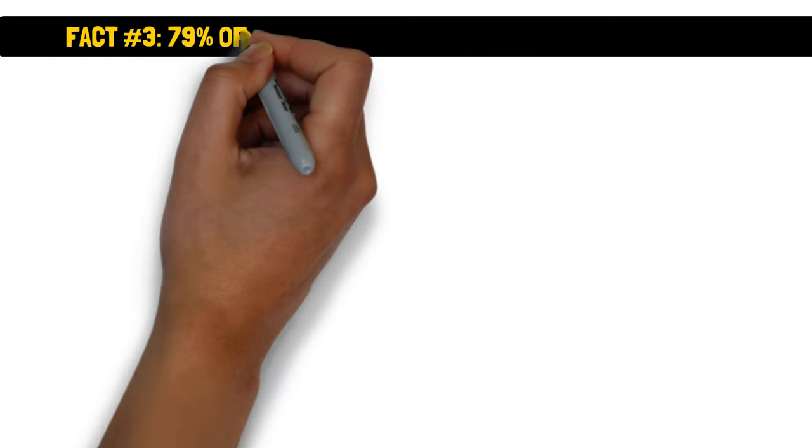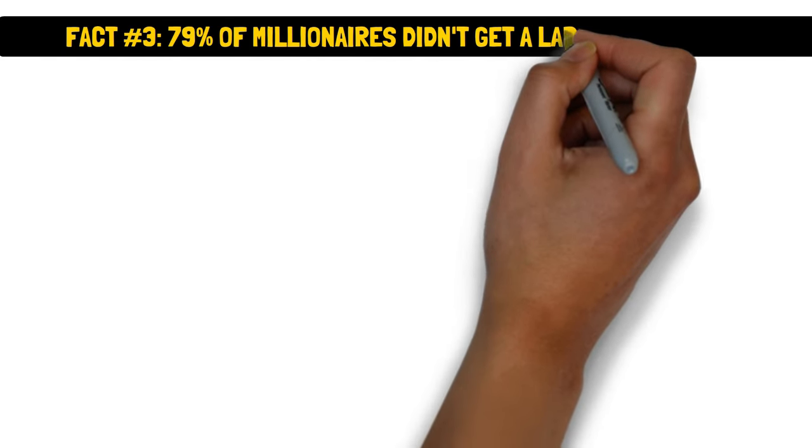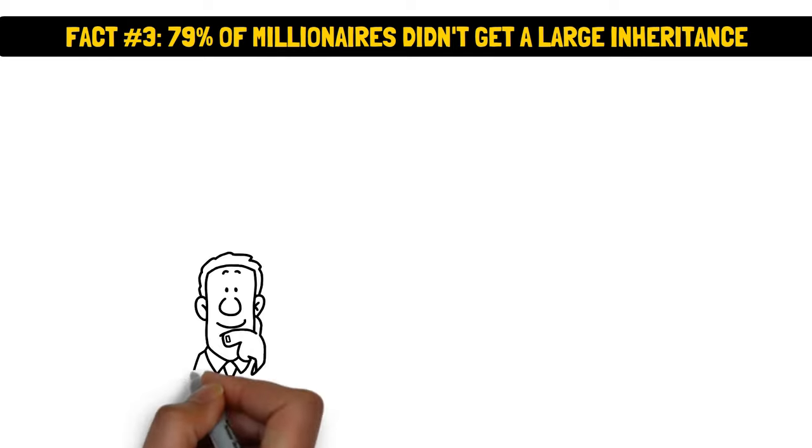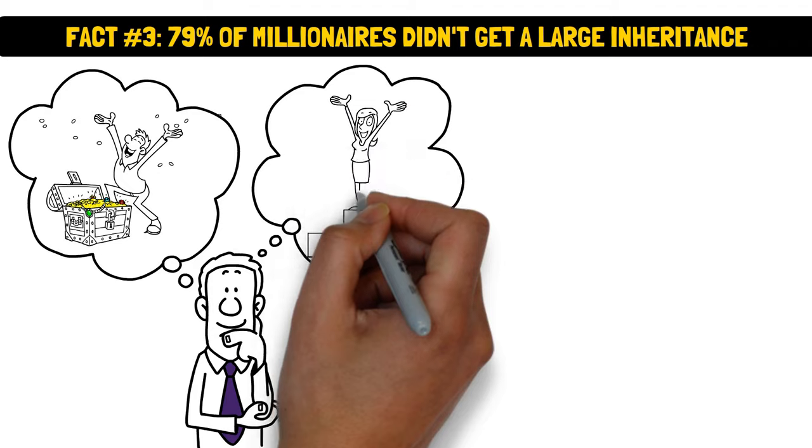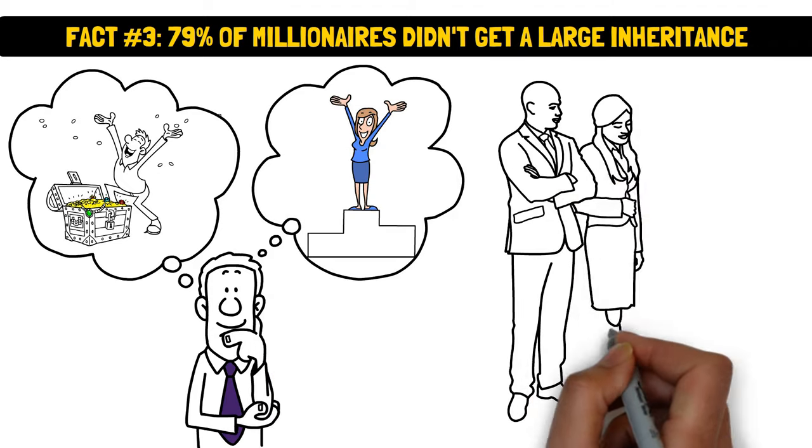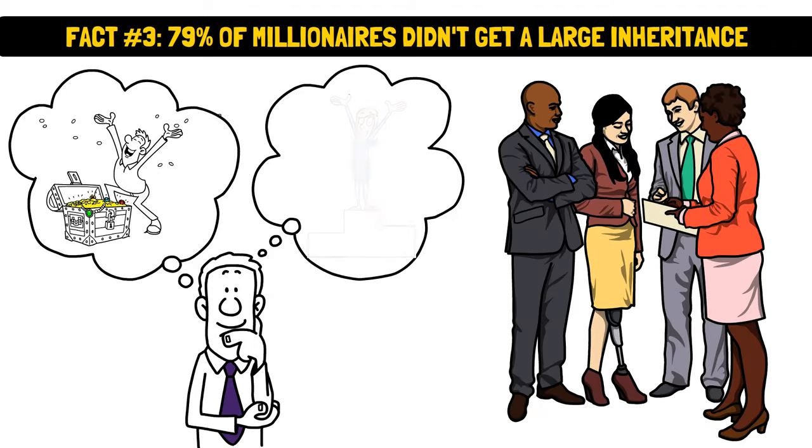Fact number three, 79% of millionaires didn't get a large inheritance. This fact blows the lid off the myth that most millionaires are trust fund babies or lucky lottery winners. Only a meager one in five got a golden parachute from their family tree.